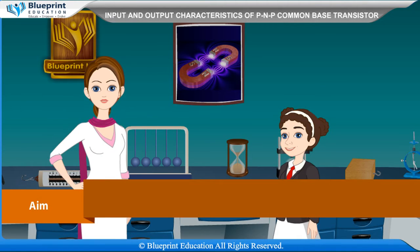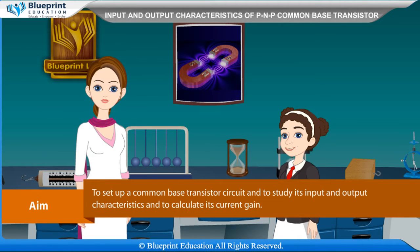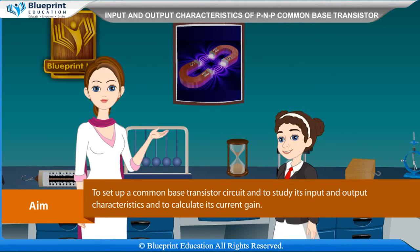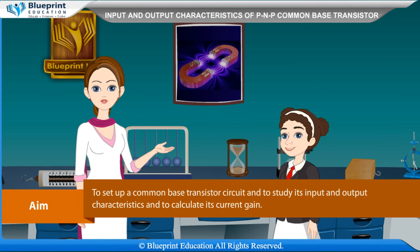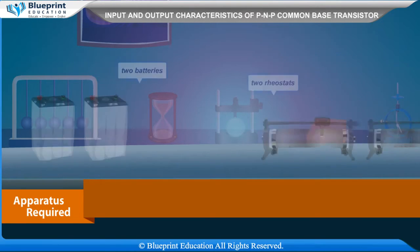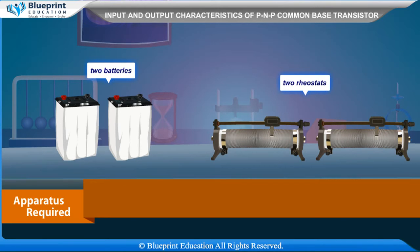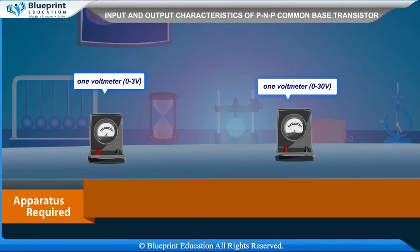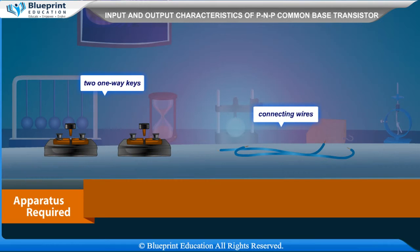Our aim here is to set up a common base transistor circuit and to study its input and output characteristics and to calculate its current gain. Apparatus required: a PNP transistor 2N2A, 2 batteries, 2 rheostats, 1 voltmeter (0 to 3 V), 1 voltmeter (0 to 30 V), 2 one-way keys, and connecting wires.